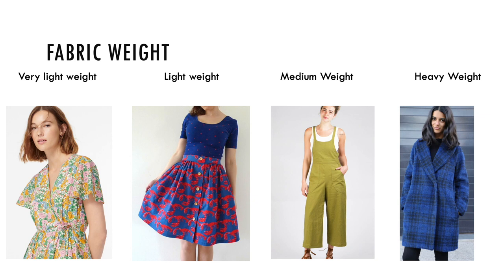Heavyweight fabrics are 10-plus ounces per yard. These are hard-wearing fabrics that are good for coats, jackets, bags, and upholstery. Some examples include canvas, heavy corduroy, denim, and wool. This woman is wearing a coat made from a heavyweight wool coating fabric.